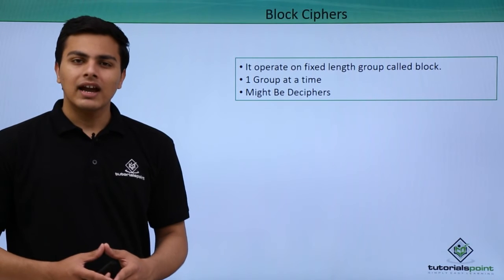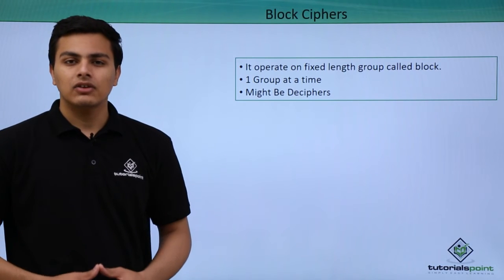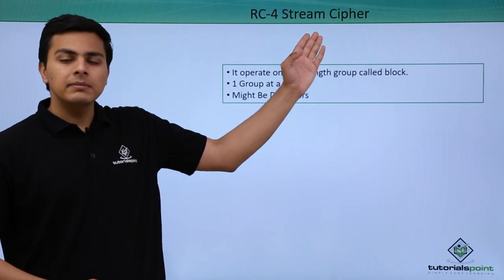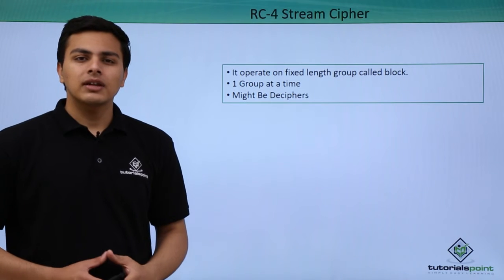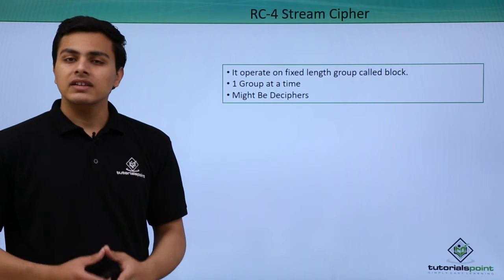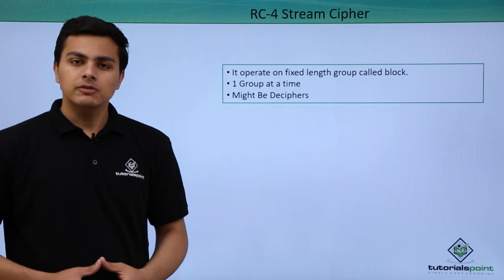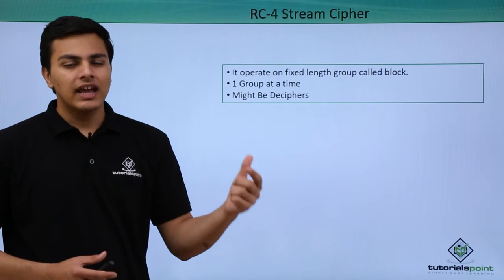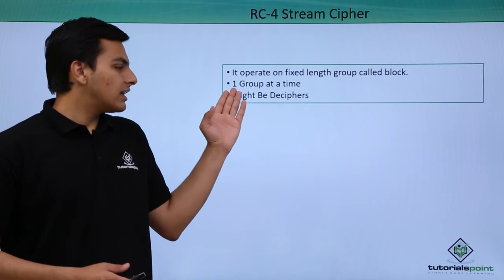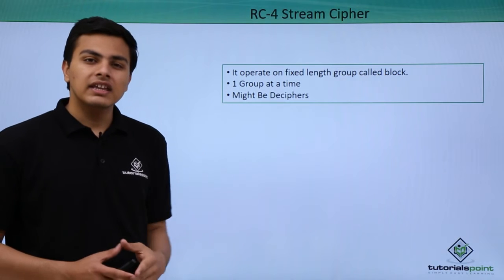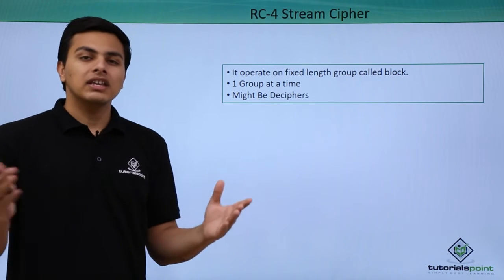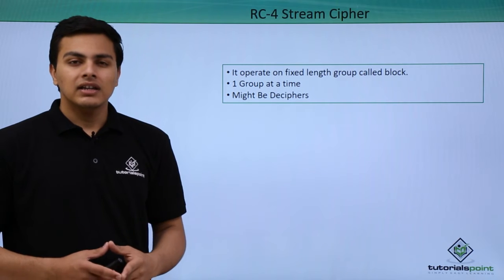Now let's talk about different kinds of encryption algorithms. The first one is the RC4 stream cipher. RC4 stands for Rivest Cipher 4, and it is a stream cipher which means it encrypts one digit at a time. It is also a symmetric key algorithm, so the key for encrypting and decrypting the data is the same.